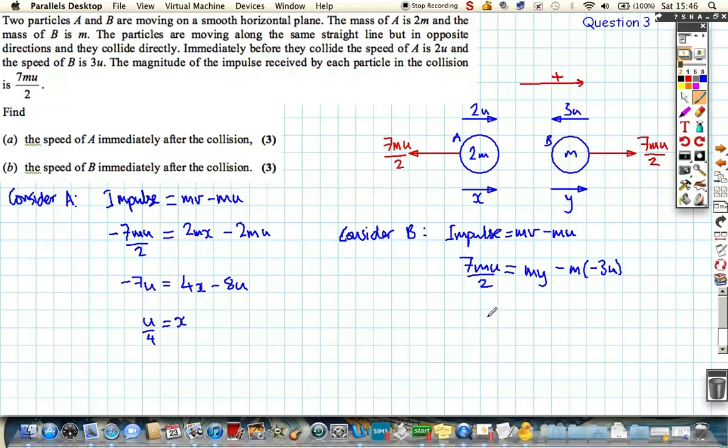Same kind of process. Let's rearrange. We get 7u equals 2y plus 6u. Rearranging, we get u over 2 equals y. It's a positive value, so it is acting to the right. The velocity of B after the collision is half u to the right, positive.